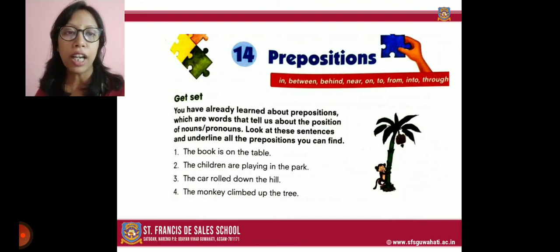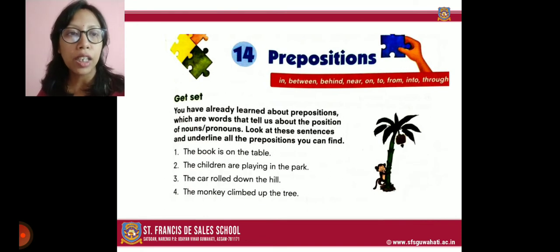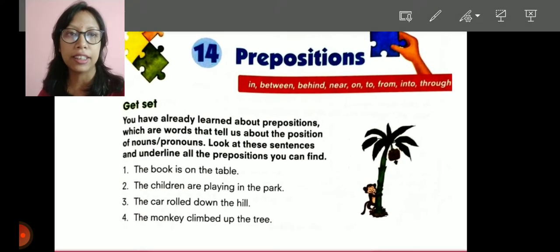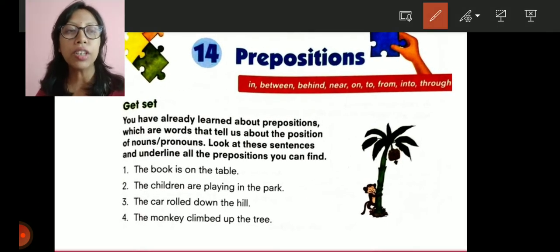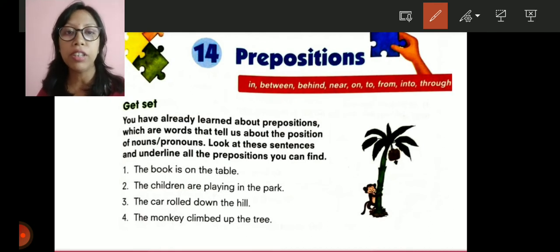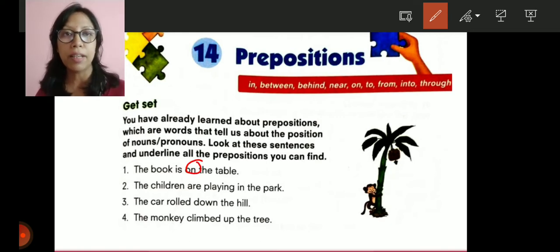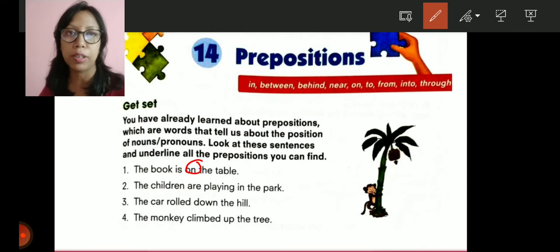Here we have some warm-up questions. Look at the sentences and underline all the prepositions you can find. The first one: the book is on the table. Where is the book? We have to find the relationship between the book and the table. The book is on the table — so 'on' is the preposition.